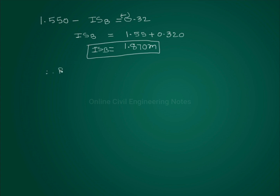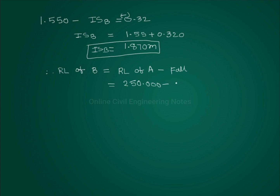Therefore, reduced level of B is equal to reduced level of A minus fall — why? Because there is a fall, the value is negative. RL of B equals RL of A minus fall value. RL of A is 250, minus fall value of 0.320, so RL of B is equal to 249.680 meters.